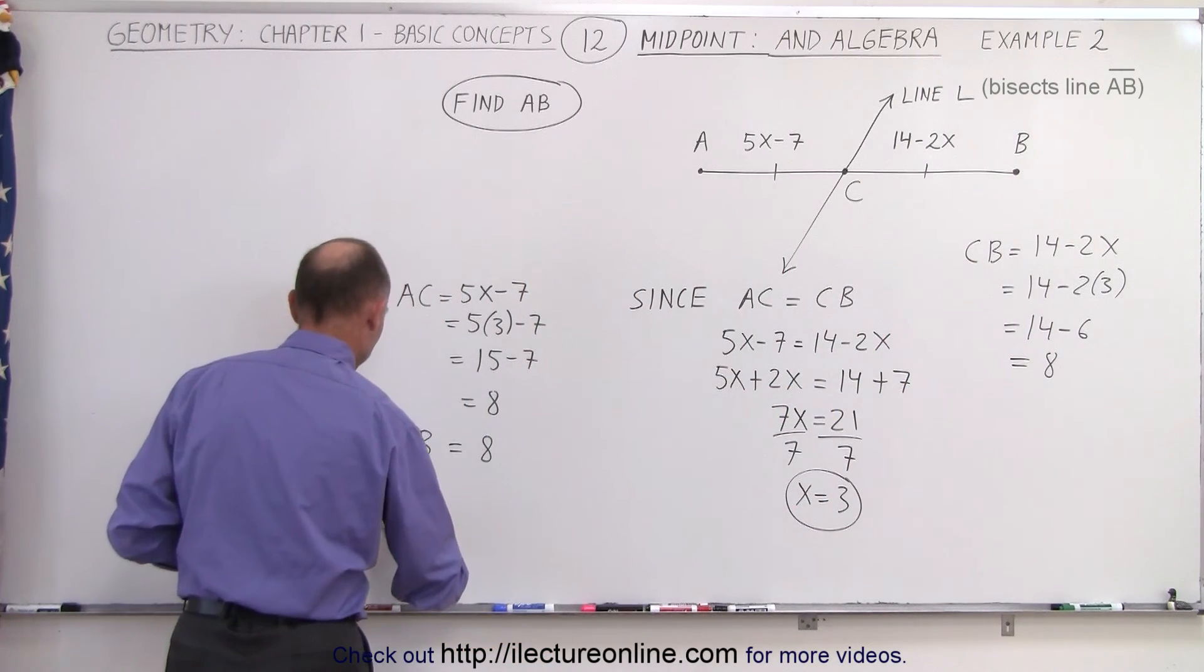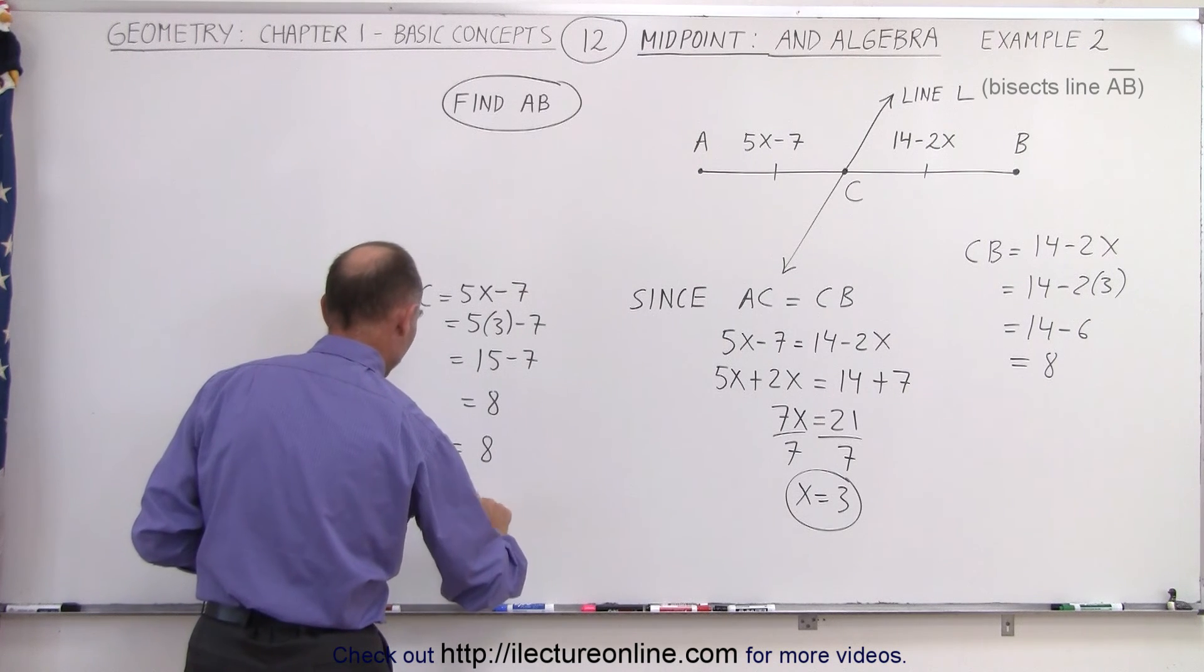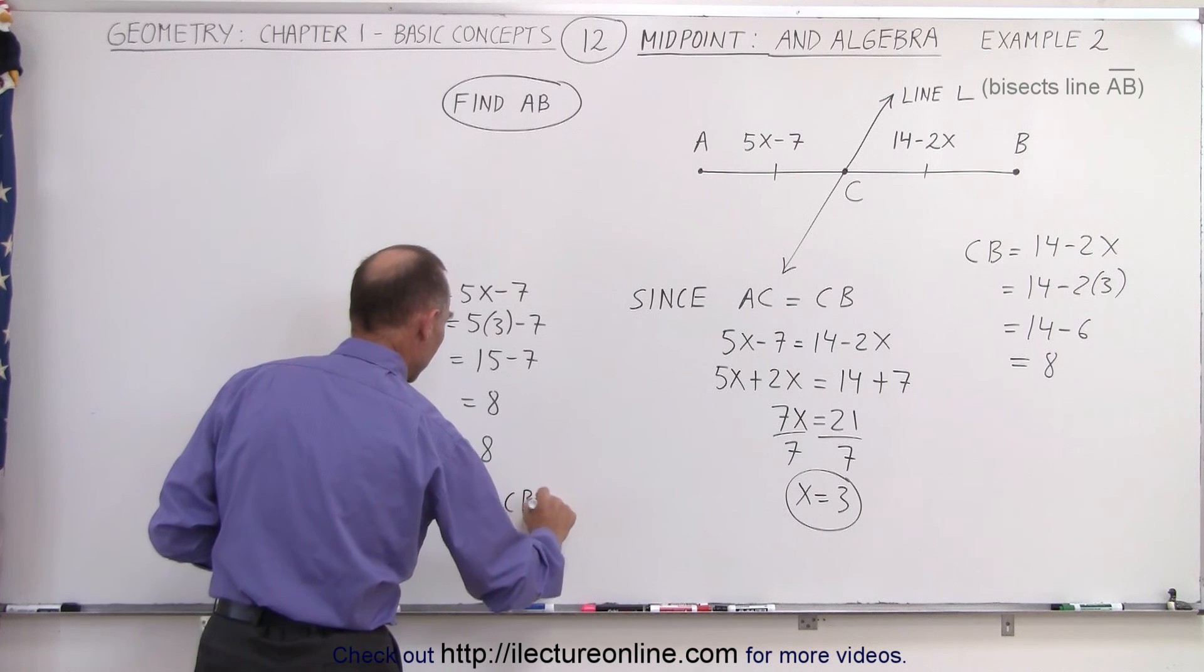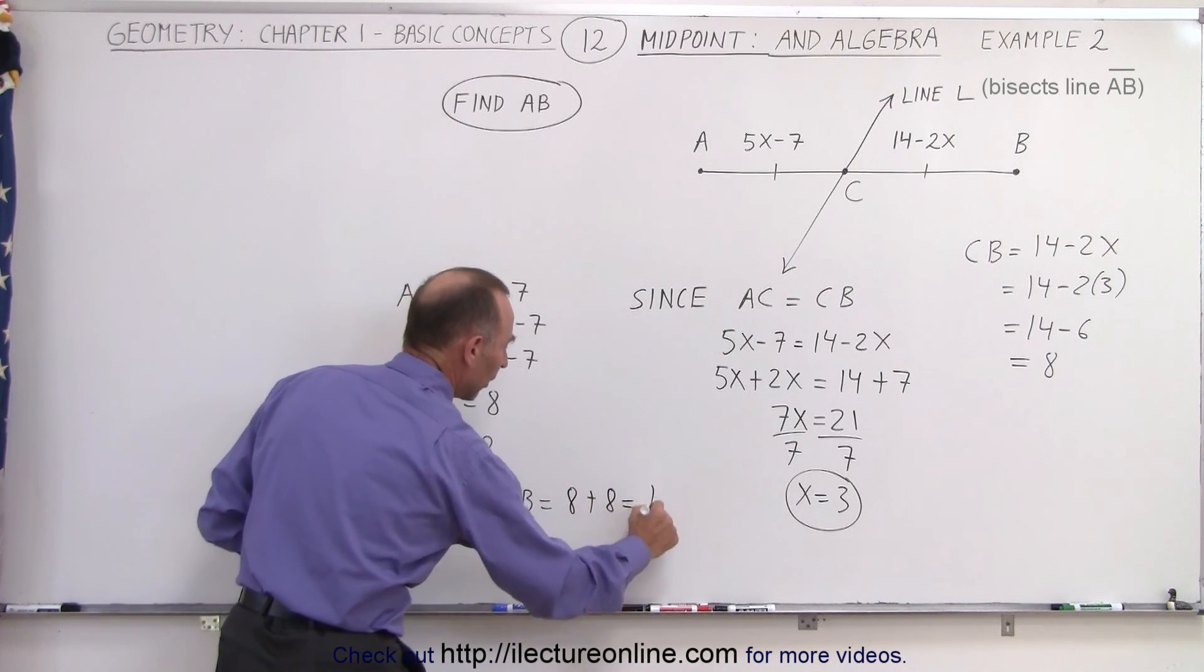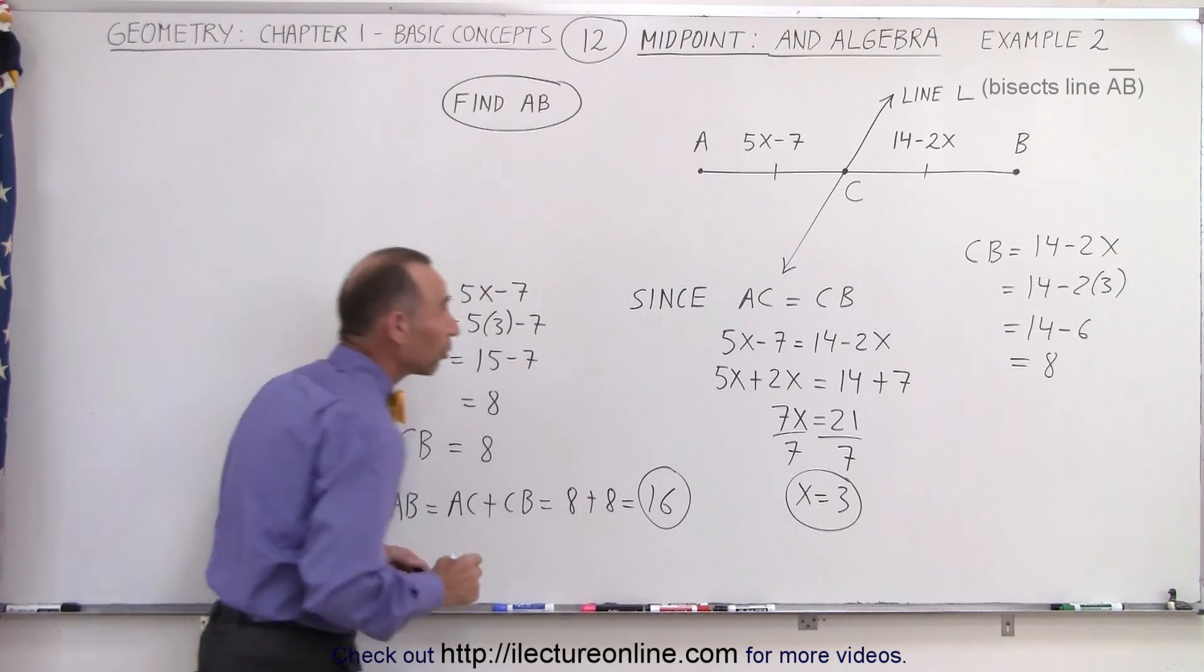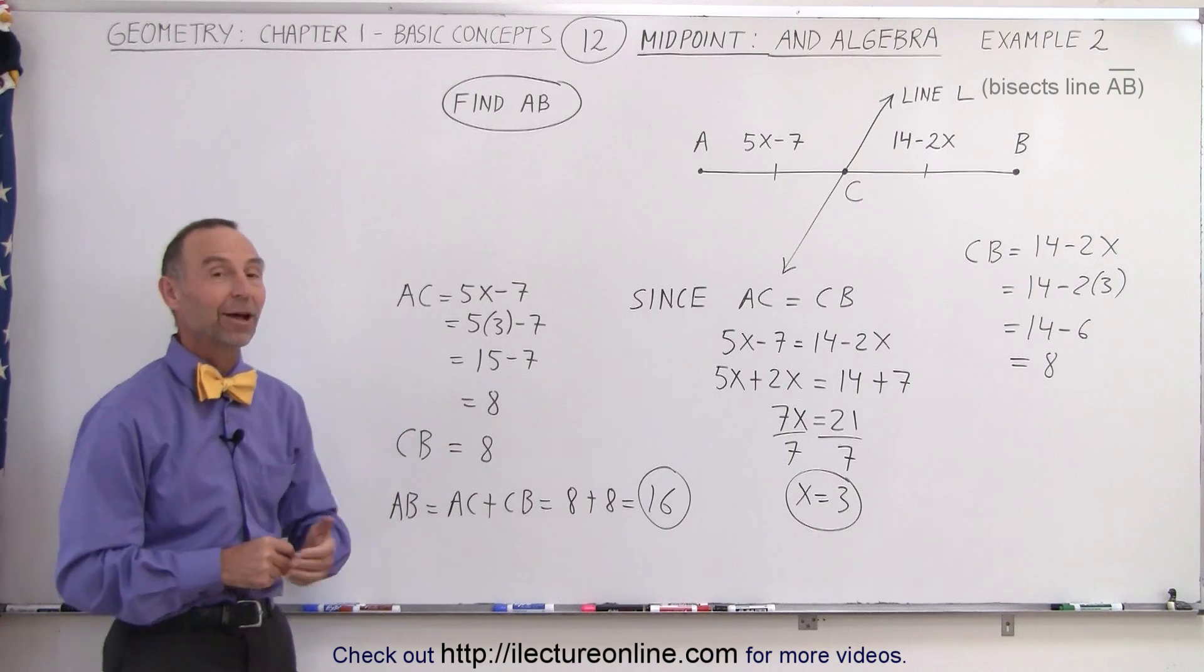So then we can say that the distance from A to B is simply the sum from A to C plus C to B, which is equal to 8 plus 8 or 16. And that would be the total length for the line segment from A to B. And that's how it's done.